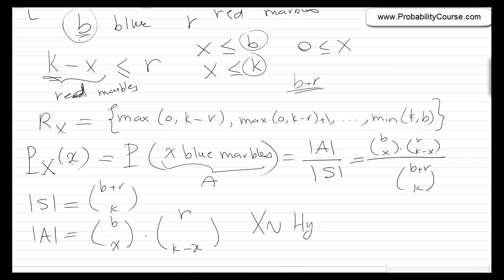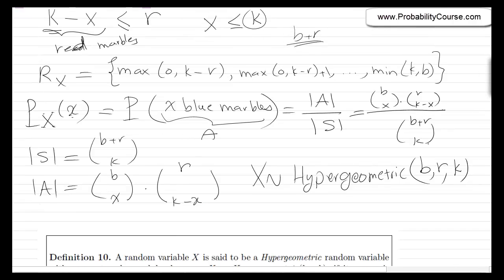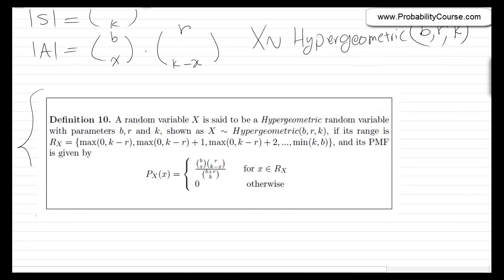This is the PMF for the hypergeometric random variable. We write x ~ Hypergeometric(b, r, k). Note there are three parameters: b (blue marbles), r (red marbles), and k (sample size). A random variable x is said to be hypergeometric with parameters b, r, and k if its range and PMF are given by the formulas above.